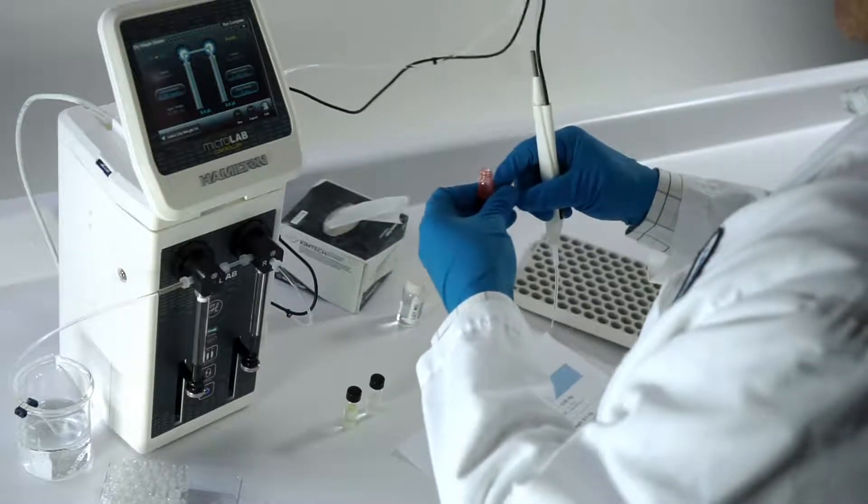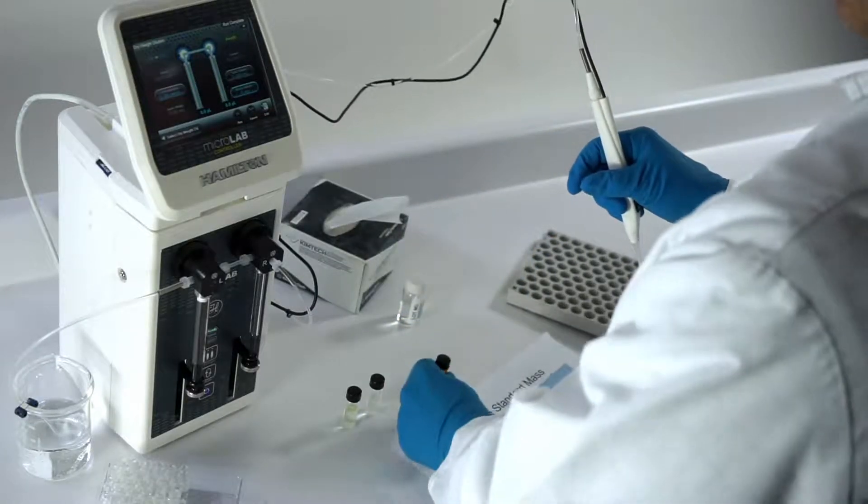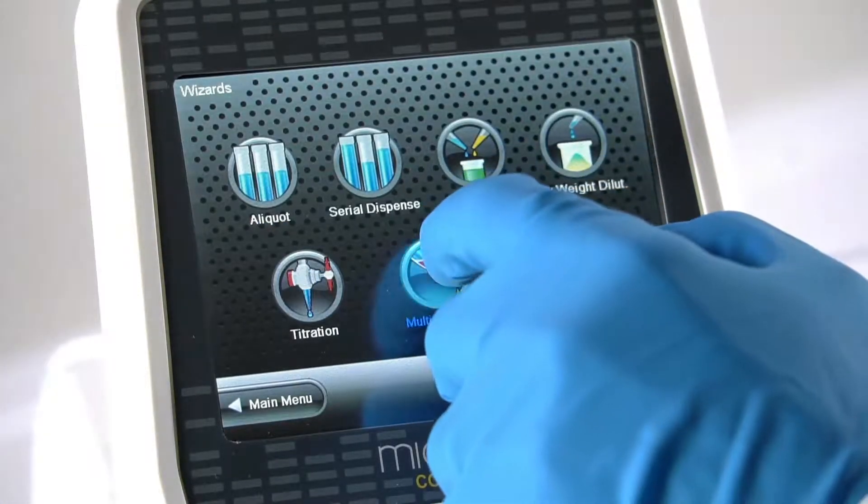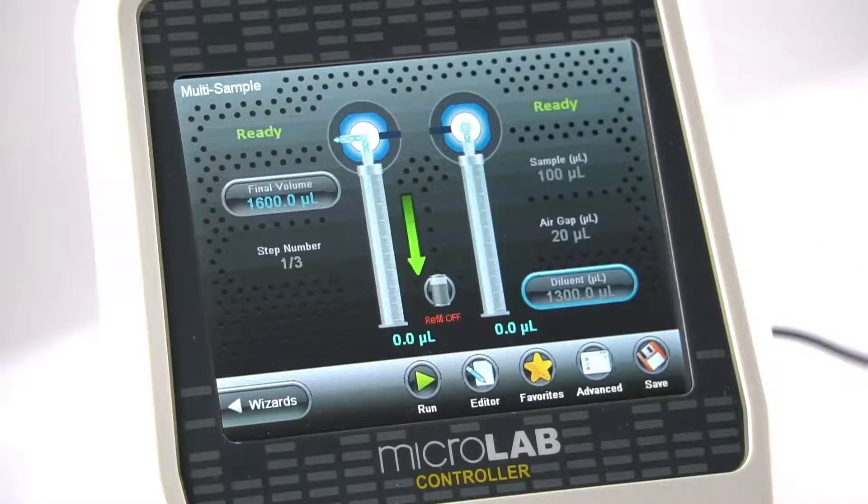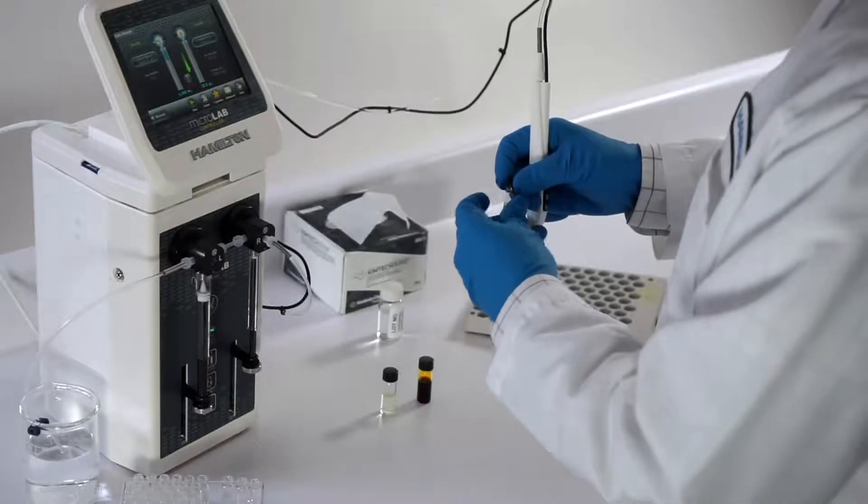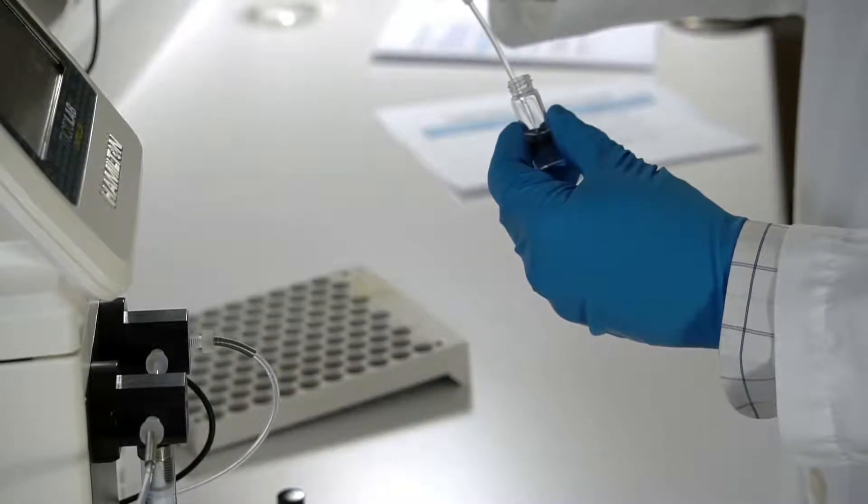Once the standards are prepared, the multi-sample dilution wizard can be used to combine the standards in the proper ratios to create a stock solution. The technician grabs the hand probe and the first vial, then aspirates the standard into the hand probe's inert tubing.